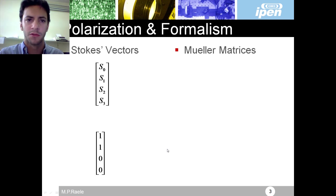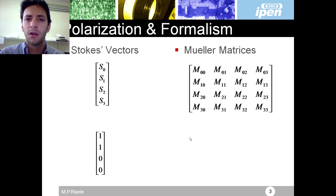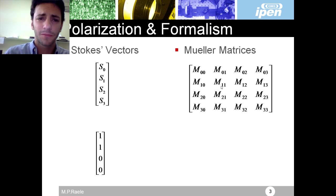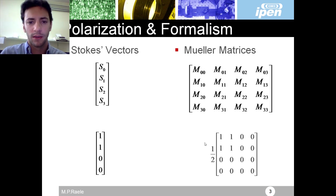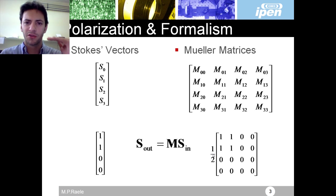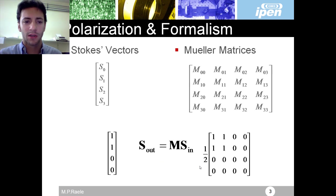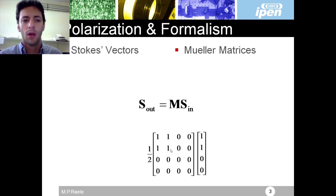For example, if I want to represent a vertically polarized light, I have this kind of Stokes vector. And Mueller matrices are the object that transforms my Stokes vectors. This is an example of a linear horizontally placed polarizer.